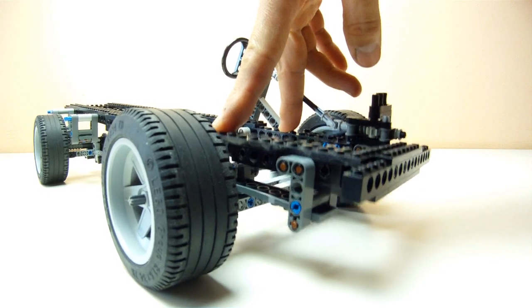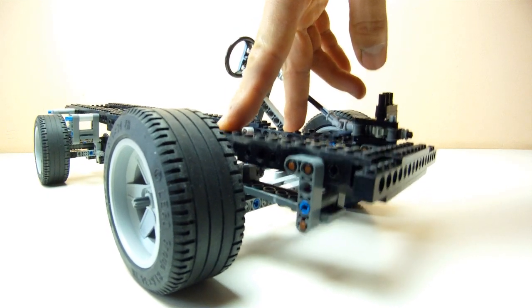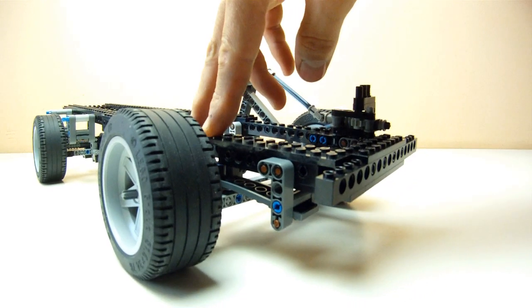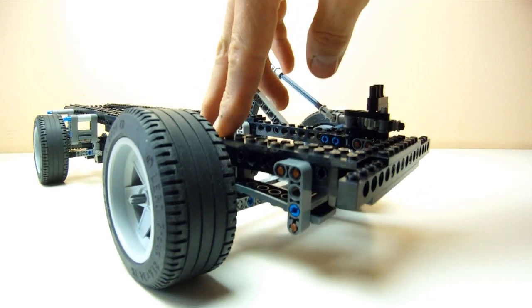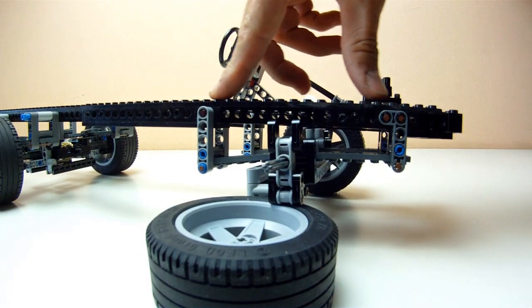Now let's see how the spring works. When compressing the chassis, the 2x16 plate that I used as a spring here bends and provides the necessary spring action.